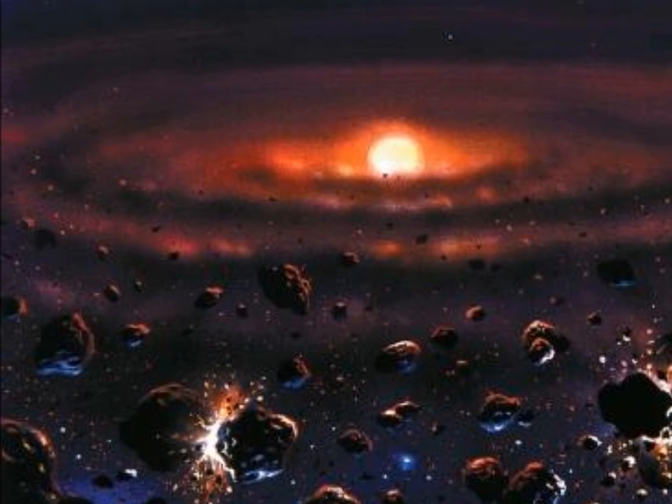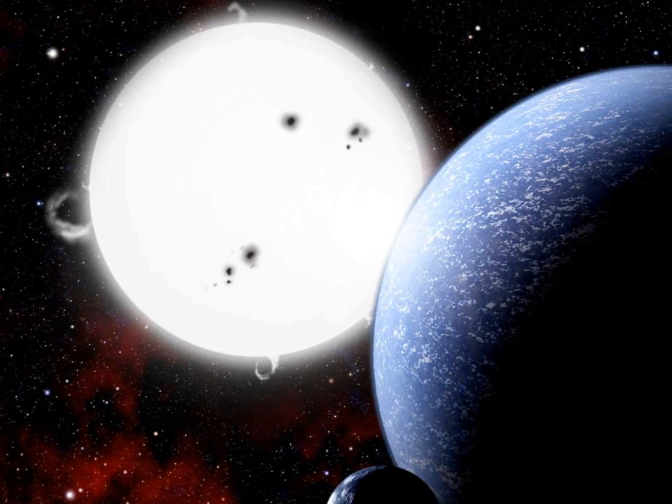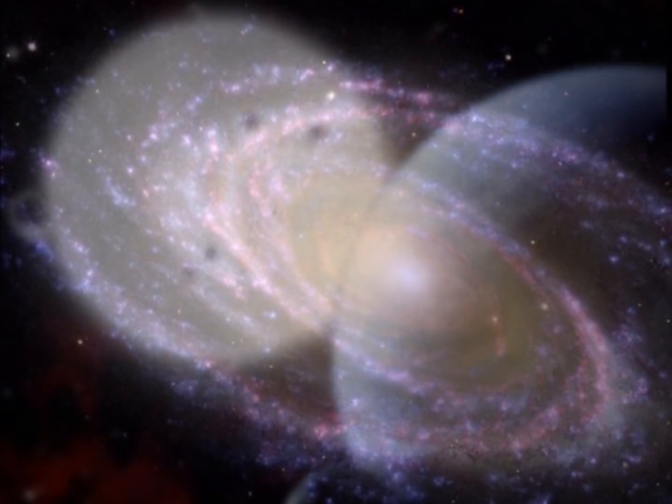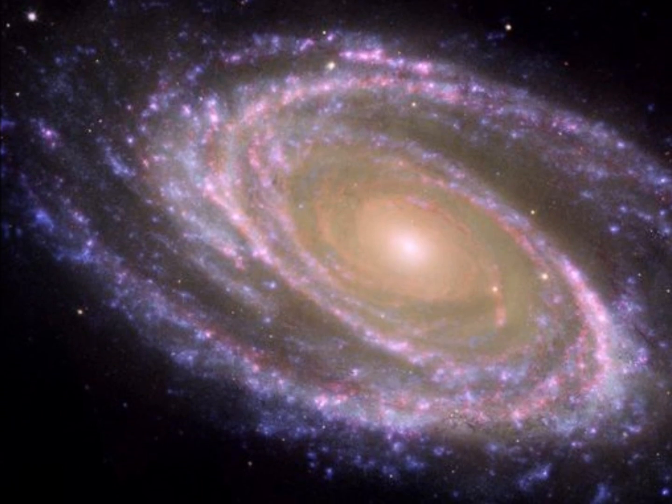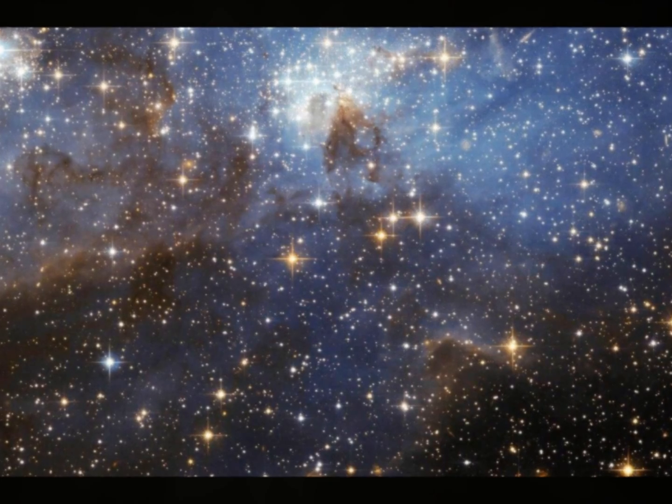You may have often wondered how scientists are able to study solar systems and suns halfway across the universe. Even though they are separated from these bodies by hundreds of millions of miles, scientists can still know how hot a star is, what elements it is made up of, and a myriad of other characteristics. The answer to this question is light.